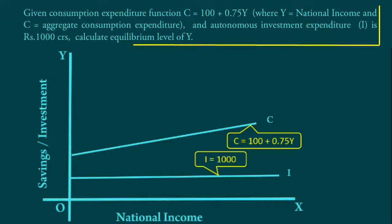By adding these two functions, we get the Aggregate Demand Function. Aggregate Demand equals C + I.